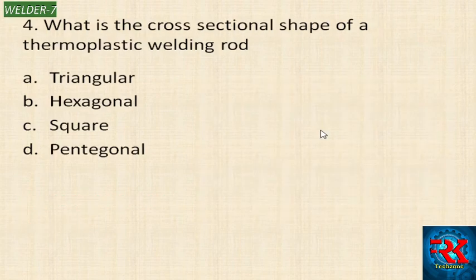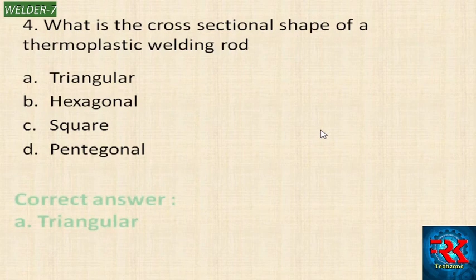What is the cross-sectional shape of a thermoplastic welding rod? The options are: triangular, hexagonal, square, or pentagonal. The correct answer is triangular.